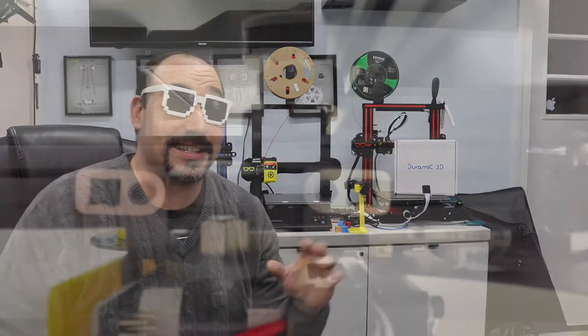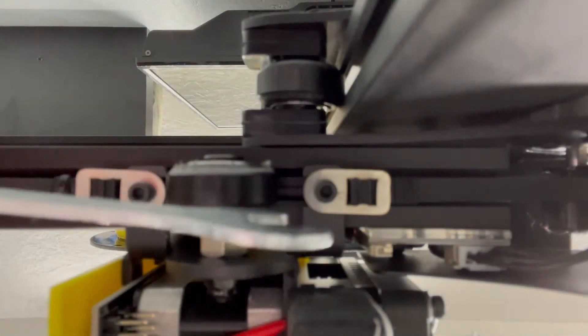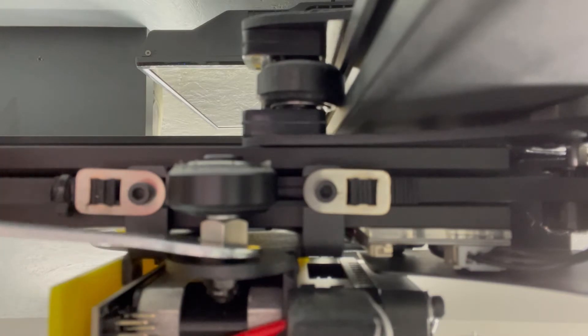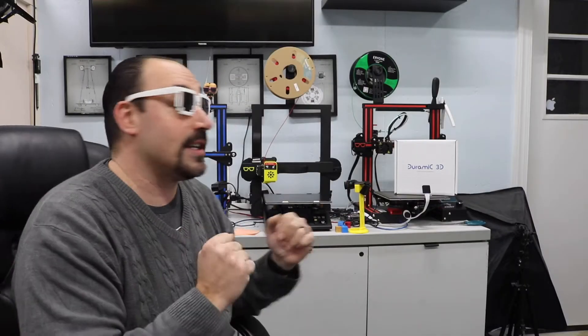Now I know what everybody's typing right now. You guys are going, why don't you just adjust the eccentric nut. Yes, I have done that. I've done a lot of things. This is the second video that I'm doing on this printer. I've been having problems with it. I did adjust the eccentric nut or the adjustment nut or whatever you want to call it. I did adjust that. It didn't work.